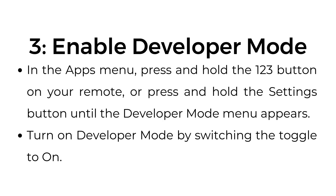Step three: enable developer mode. In the Apps menu, press and hold the 123 button on your remote, or press and hold the Settings button until the developer mode menu appears.